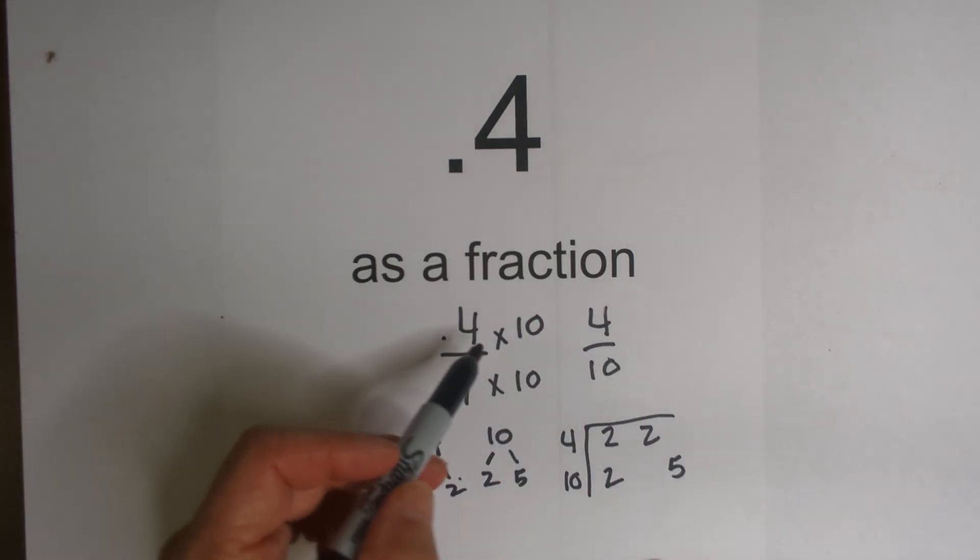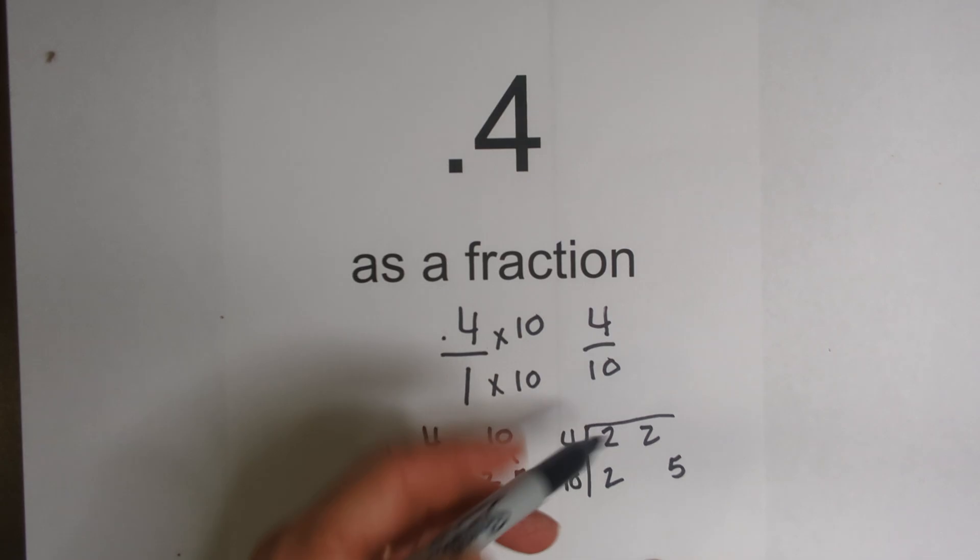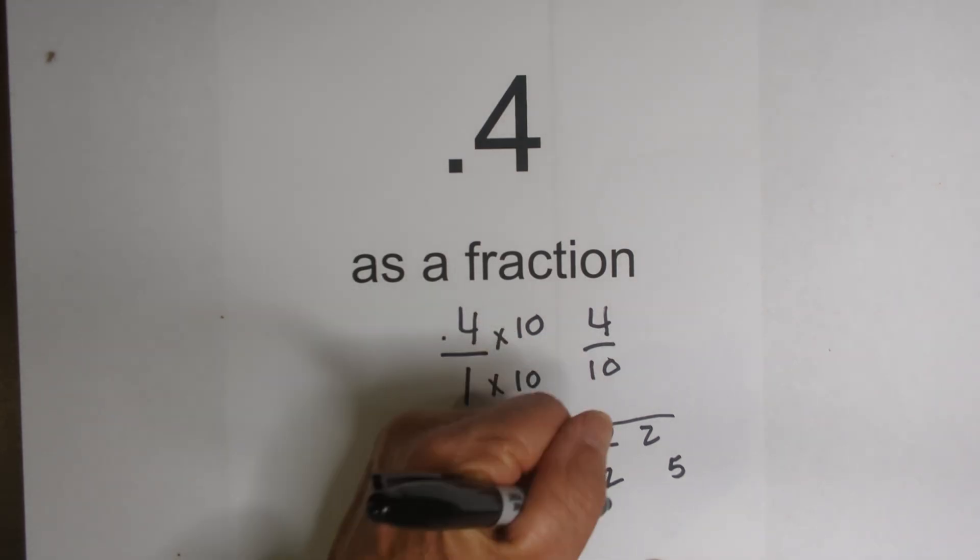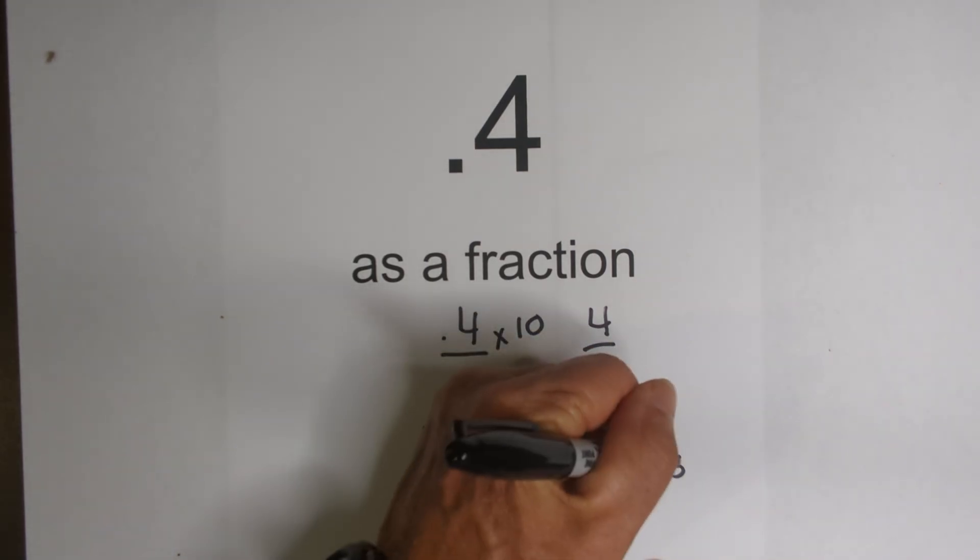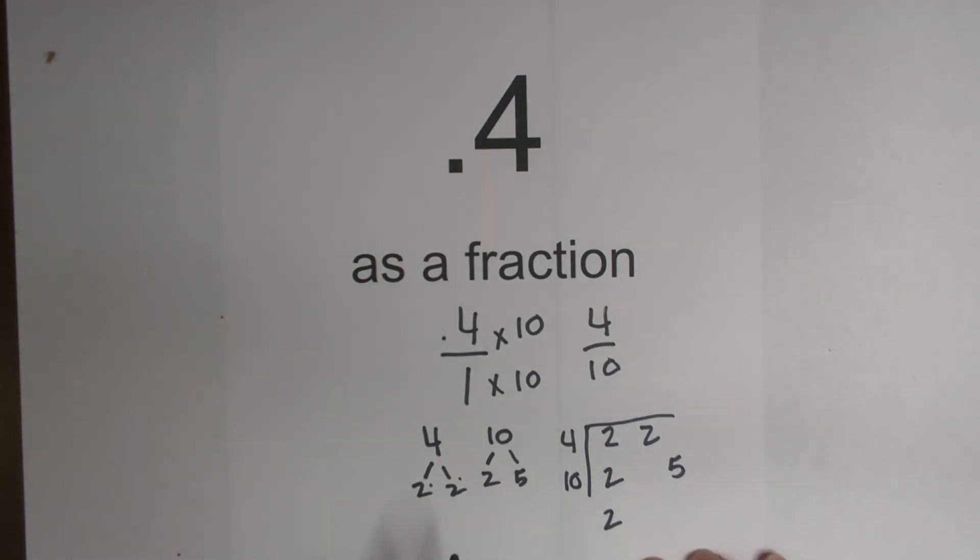So what we do, since we have 2 numbers, we're going to look for 2 numbers in a vertical column. So we have a 2 here, nothing here, nothing here. So the greatest common factor is 2.